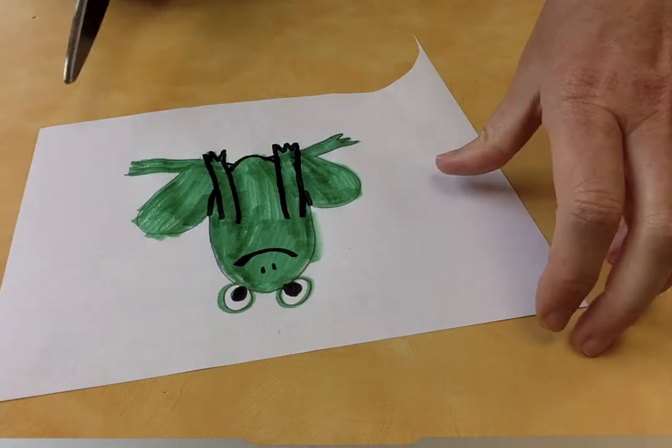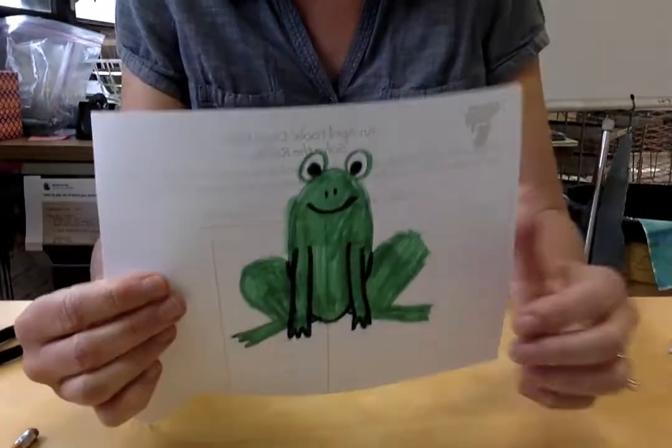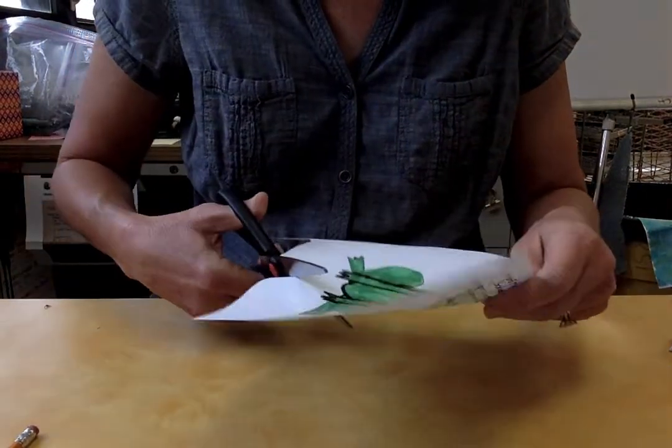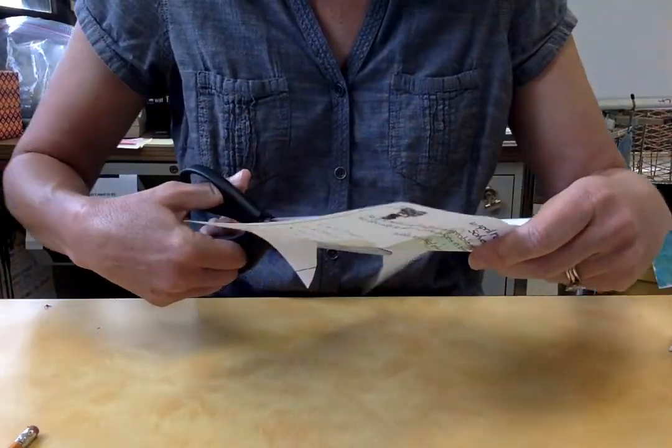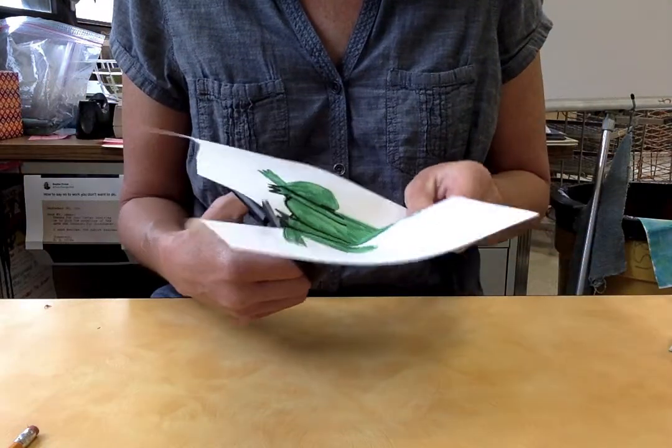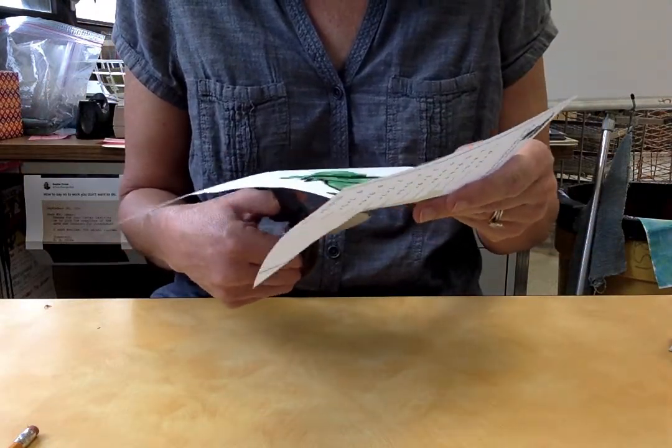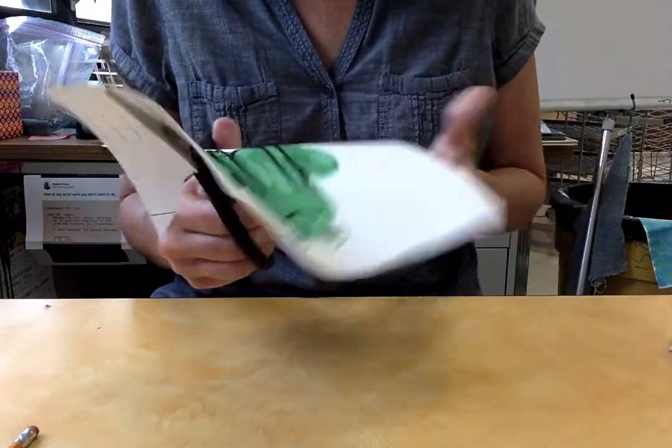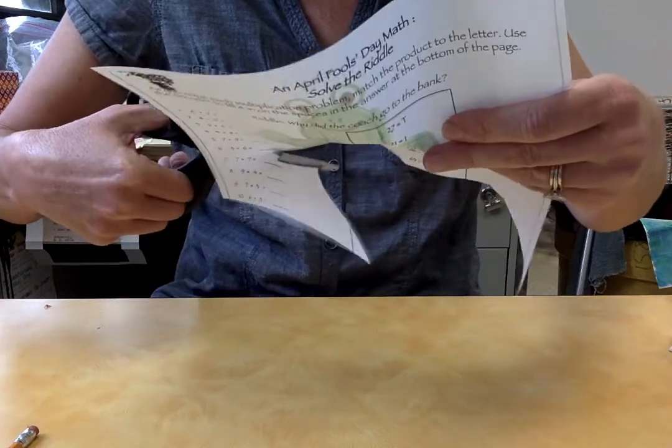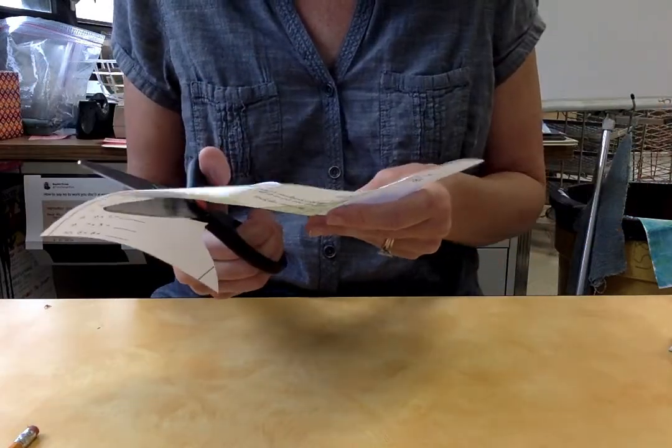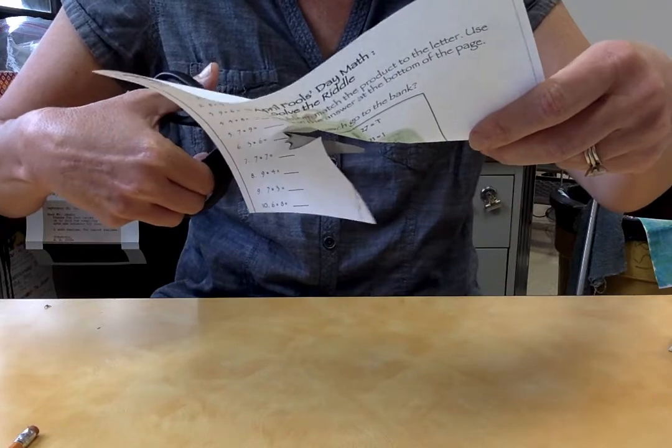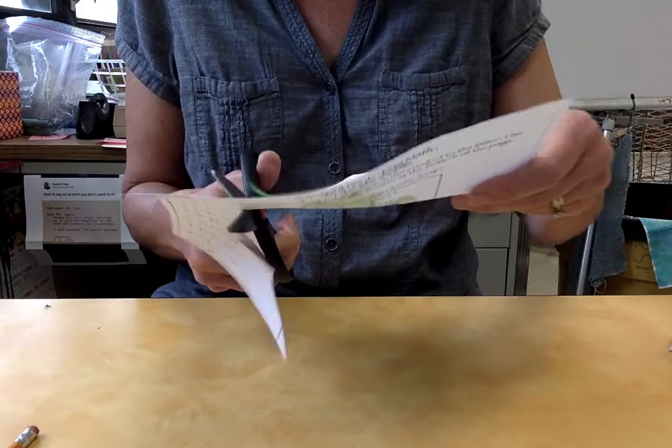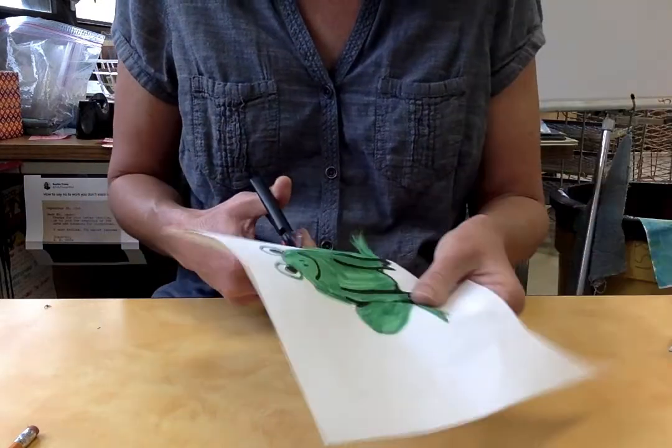All right, now I'm ready to cut out my frog. So there he is, Mr. Happy Philippe. Now I'm gonna go ahead and cut that out, cutting carefully around his pointy toes.